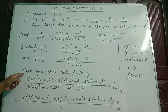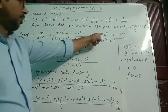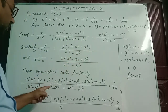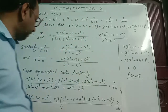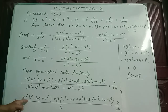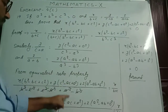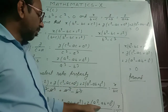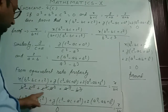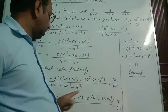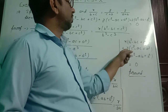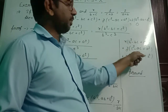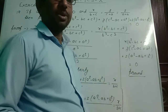Now, I have used equivalent ratio property — I have added all the numerators and denominators. I got the combined expression, which equals any ratio; I have taken x by b plus c. So what we are getting is: x into b square minus bc plus c square plus y into c square minus ac plus a square plus z into a square minus ab plus b square, all divided by the denominators which cancel to 0, equals x by b plus c. Therefore, by cross multiplication, the numerator equals 0: x into b square minus bc plus c square plus y into c square minus ac plus a square plus z into a square minus ab plus b square equals 0. Proved.